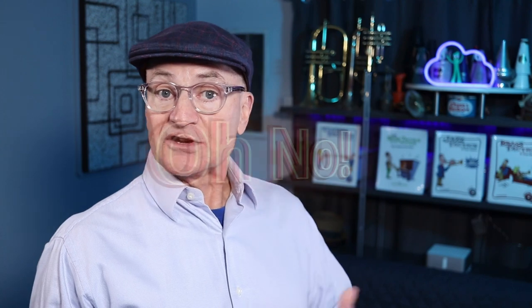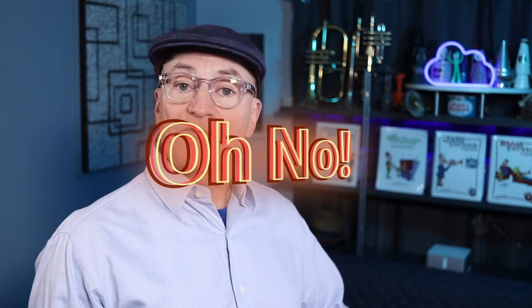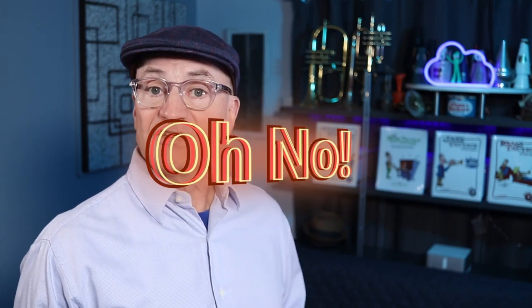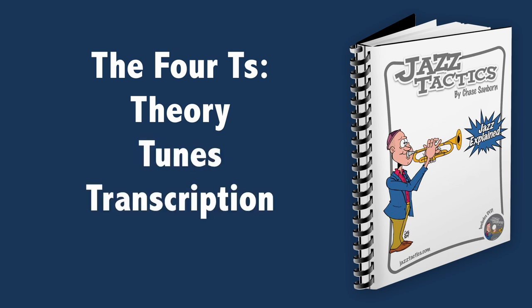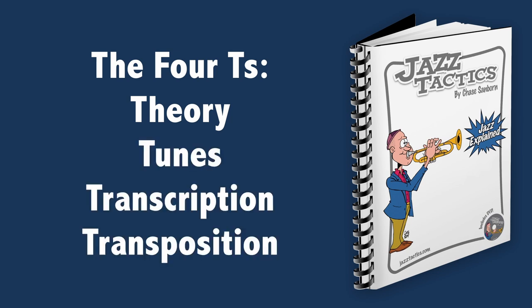Now let's talk about theory and its relevance to the process of improvisation. In jazz tactics, I talk about theory being one of the four T's — the four things you need to address if you want to learn how to improvise. The others are tunes, transcription, and transposition.